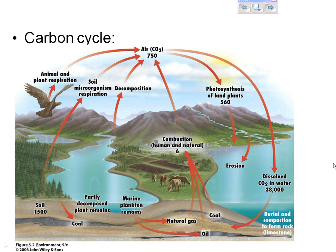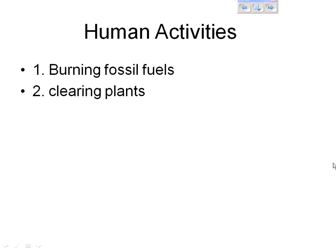Human activities on the carbon cycle: burning fossil fuels like coal, oil, and natural gas puts carbon dioxide into the atmosphere. Deforestation removes carbon sinks. Remember that carbon dioxide is the number one anthropogenic greenhouse gas and it absorbs infrared radiation.